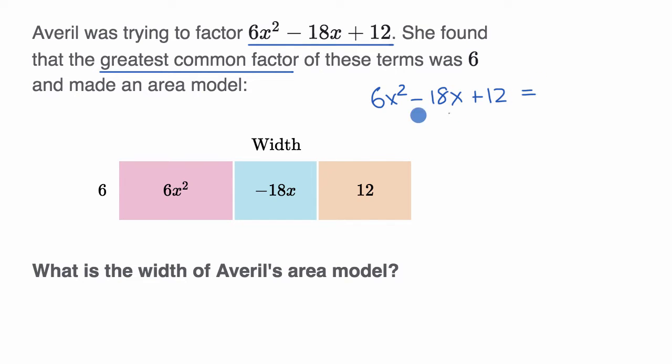So one way you could think about it is this could be rewritten as 6 times something else. And to help her think about it, she thought about an area model where if you had a rectangle, and if the height is 6 and the width, let's just call that width for now.